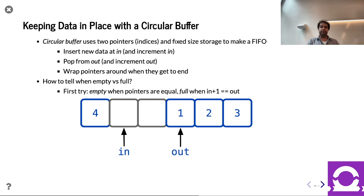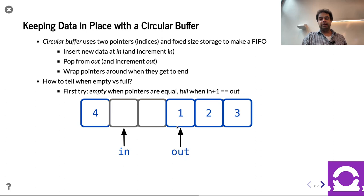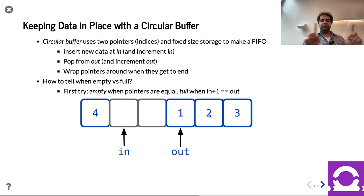Using something called a circular buffer — a technique pervasive across computing, not just hardware but also systems — you have a fixed-sized array with two pointers: an in pointer and an out pointer. To insert, you simply write to the in pointer and then move it over one. For dequeuing, you simply read the value from the out pointer and move the out pointer over one. The reason we call it a circular buffer is that when these pointers reach the end, you wrap back around.